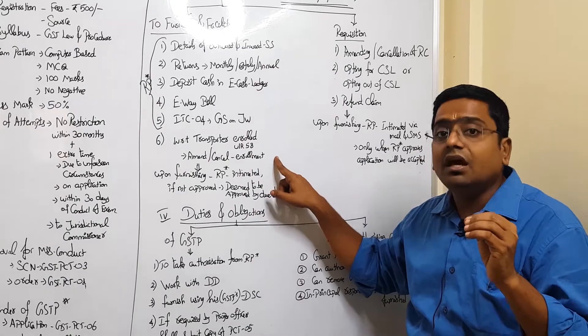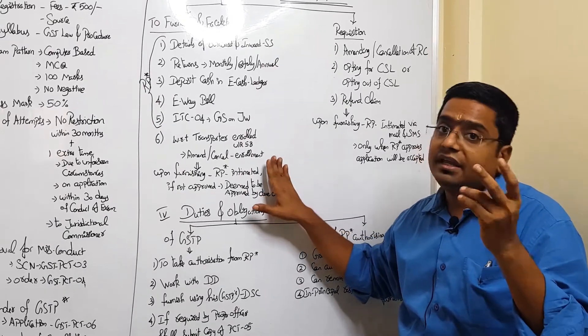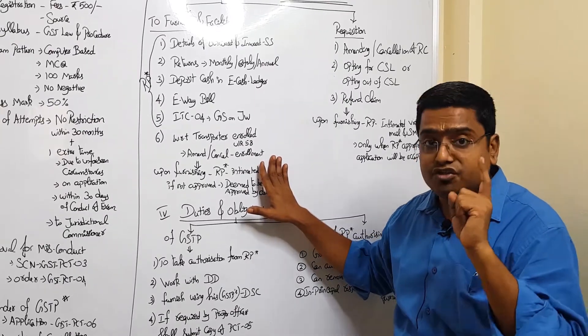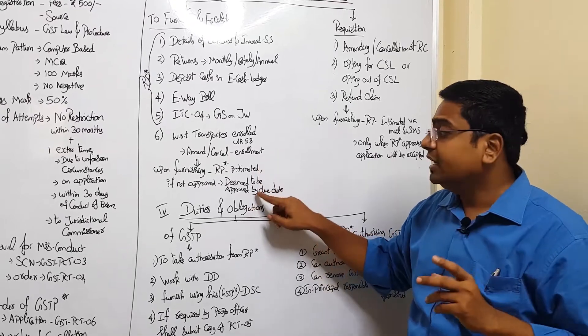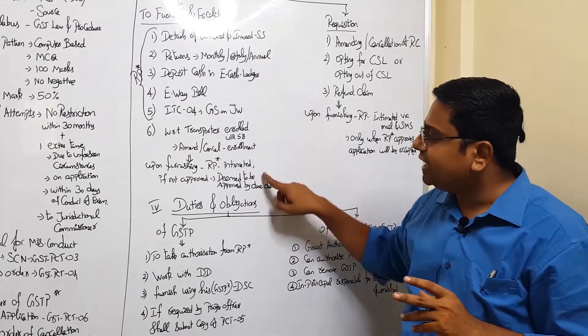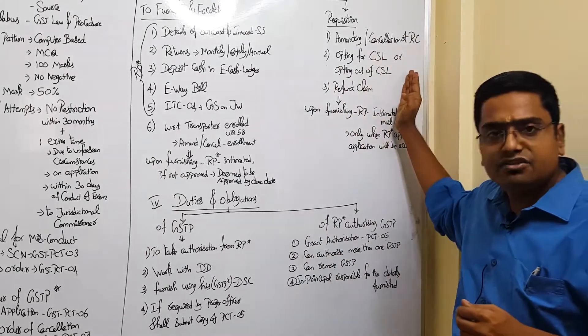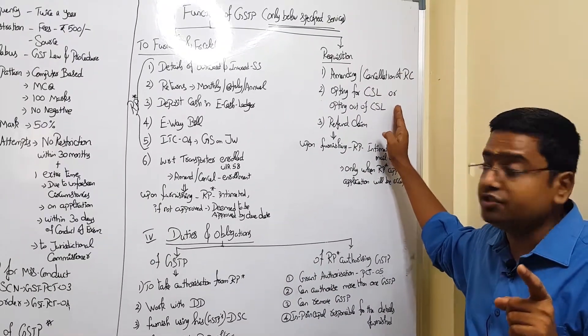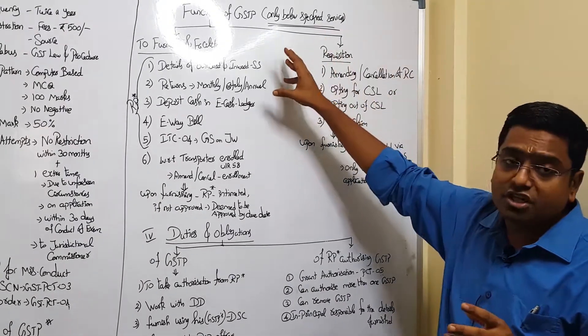And this registered person who authorized all these activities to be performed by the GSTP can approve or he need not act. But if he has not approved within the due date, it is deemed to be approved. For the six categories, it is deemed to be approved by the due date.